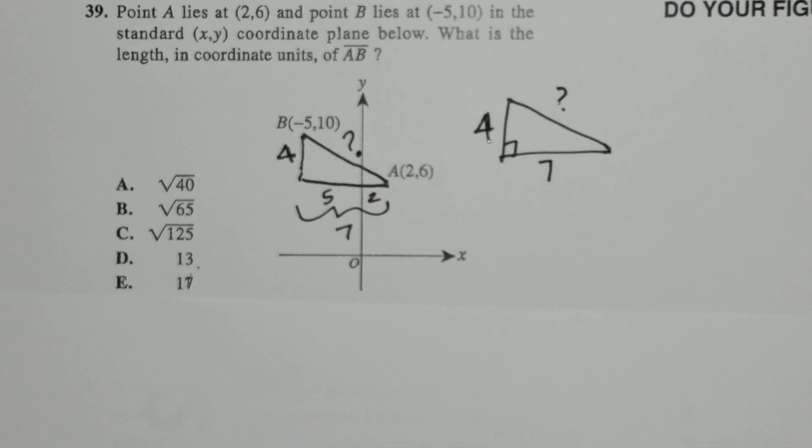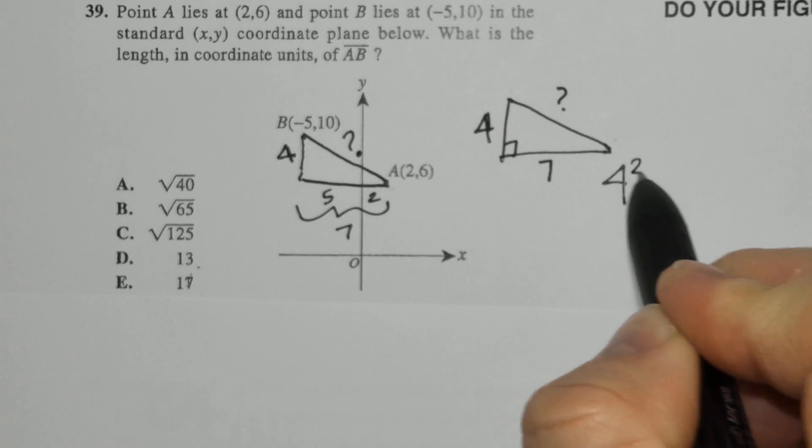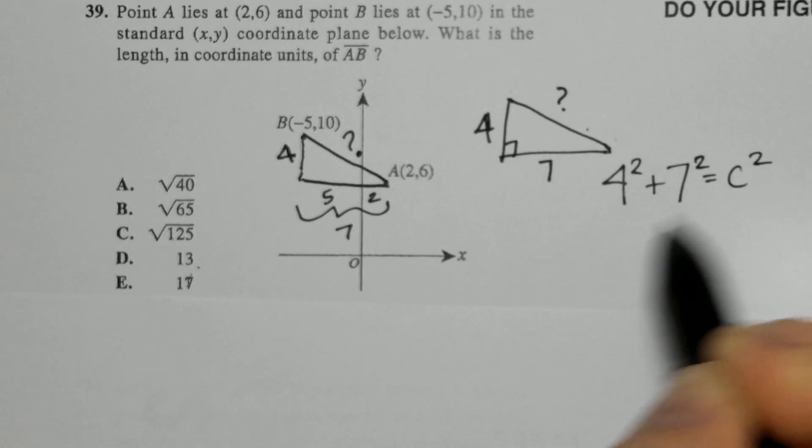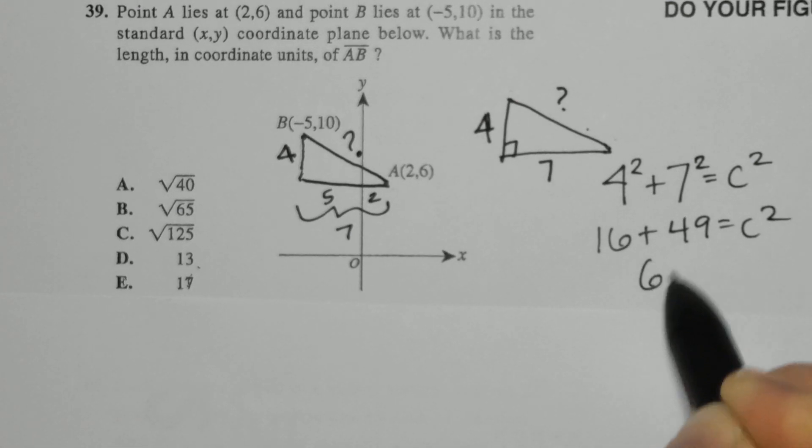How does that help? In the Pythagorean Theorem, I can solve for the length of the hypotenuse. A squared plus B squared equals C squared. 16 plus 49 is 65.